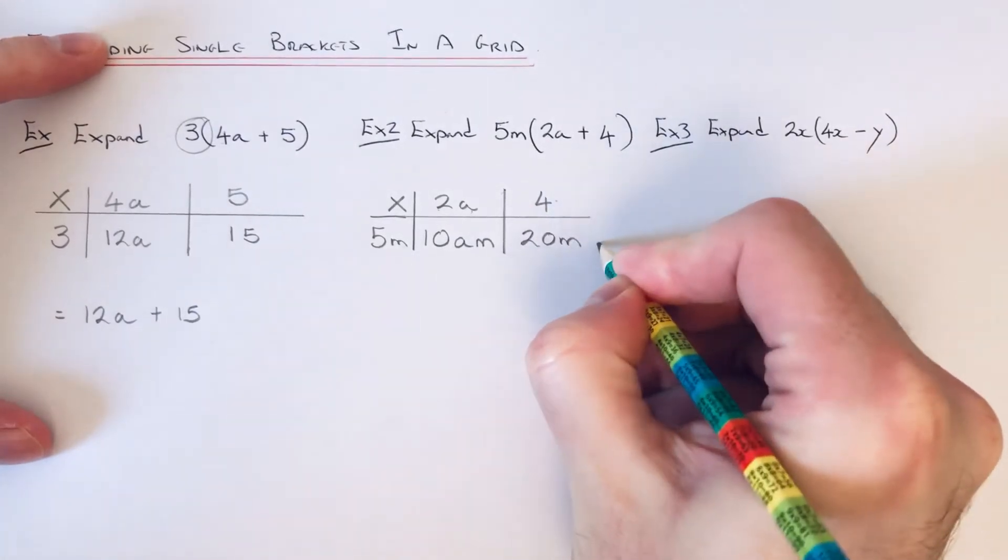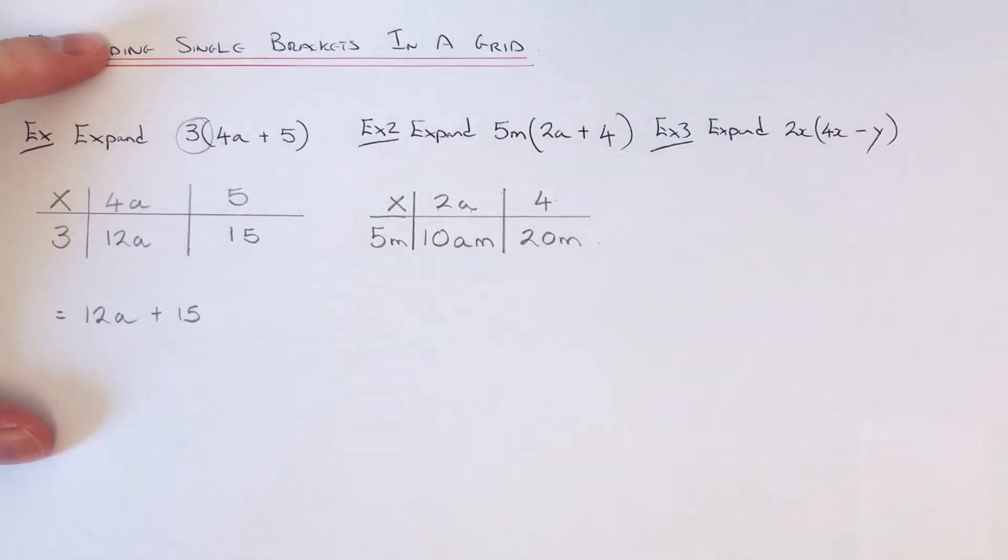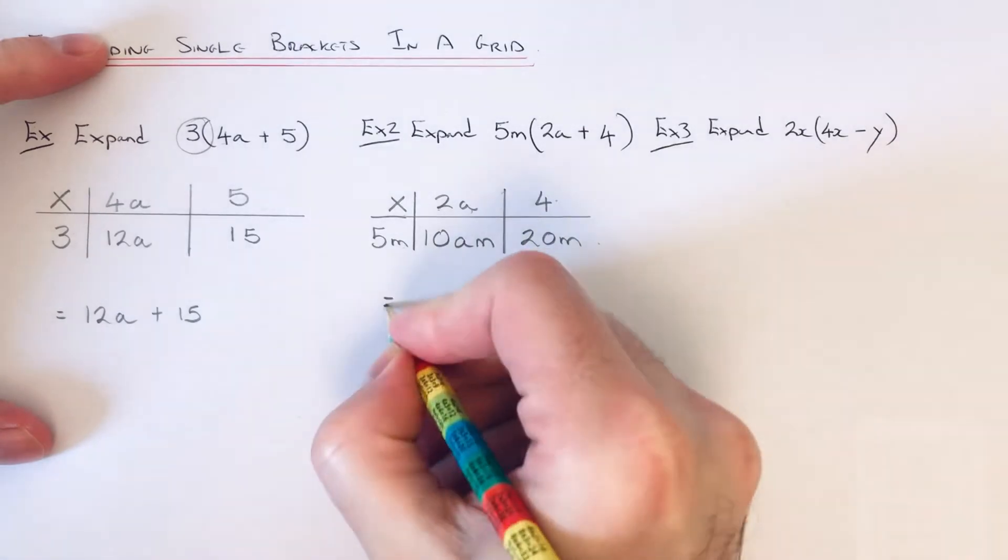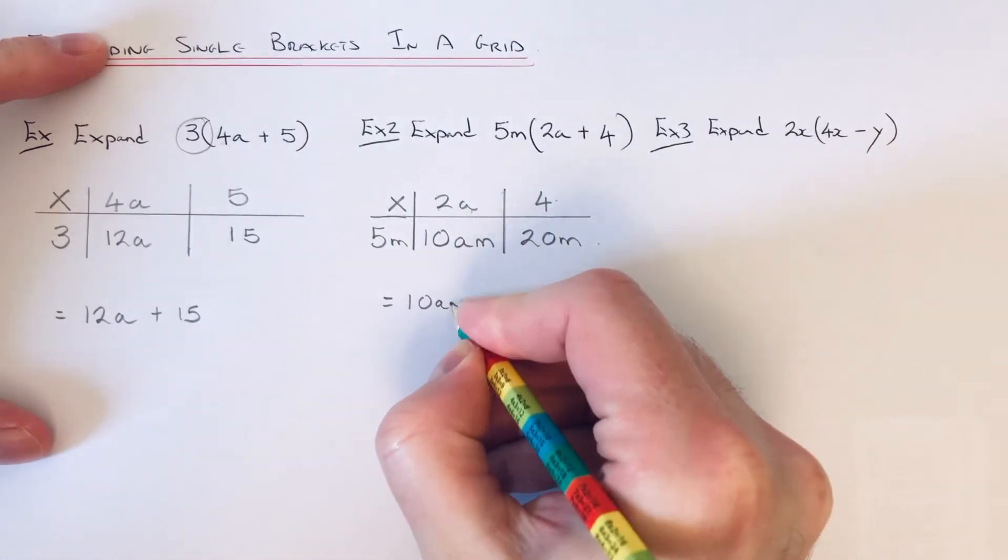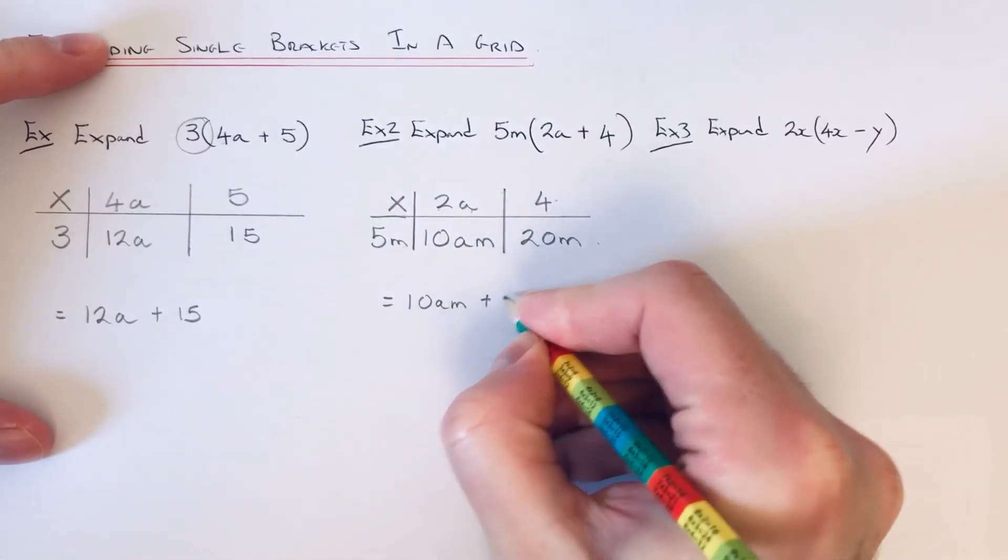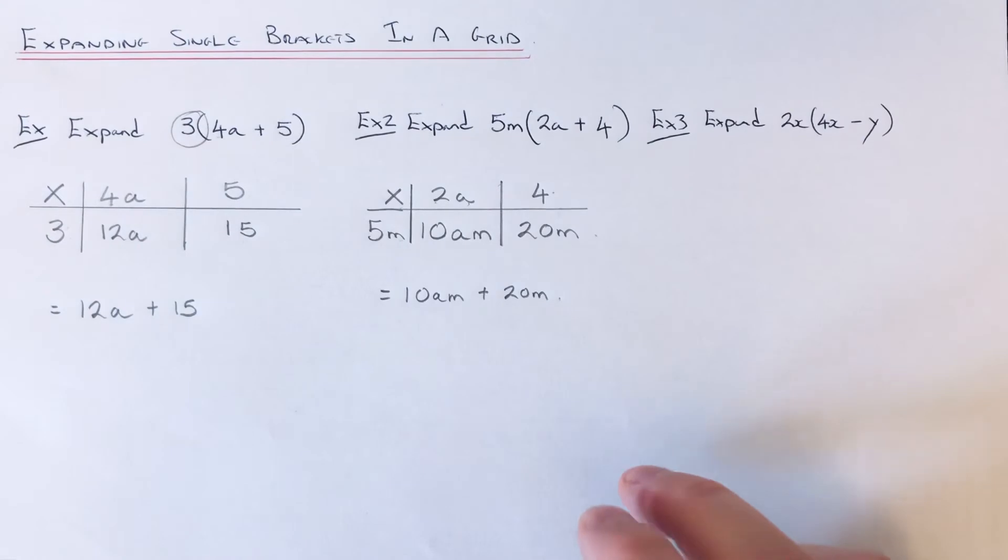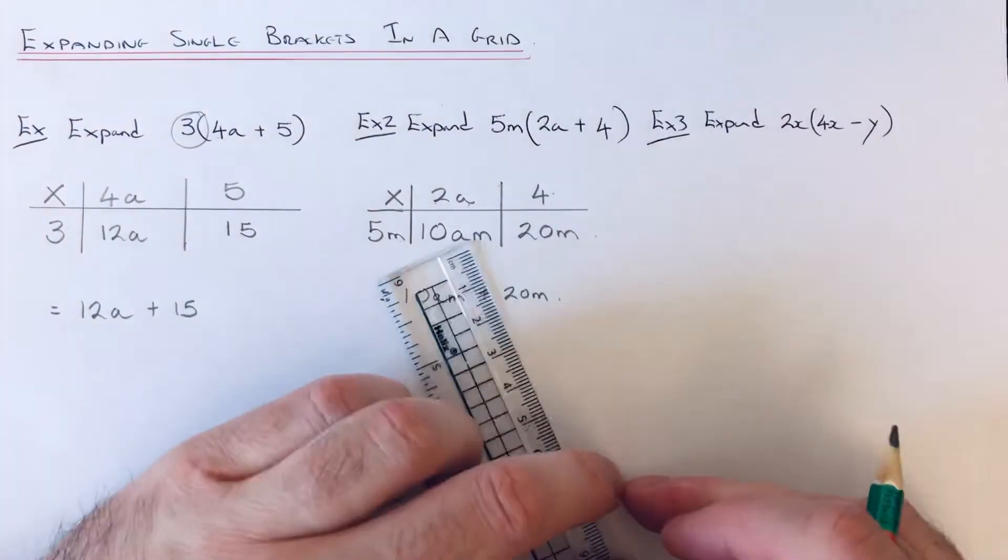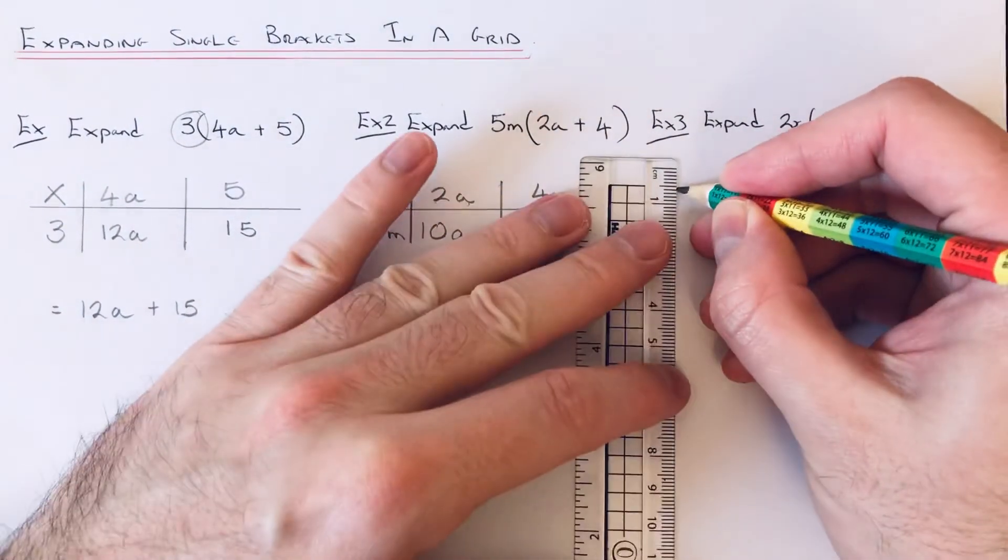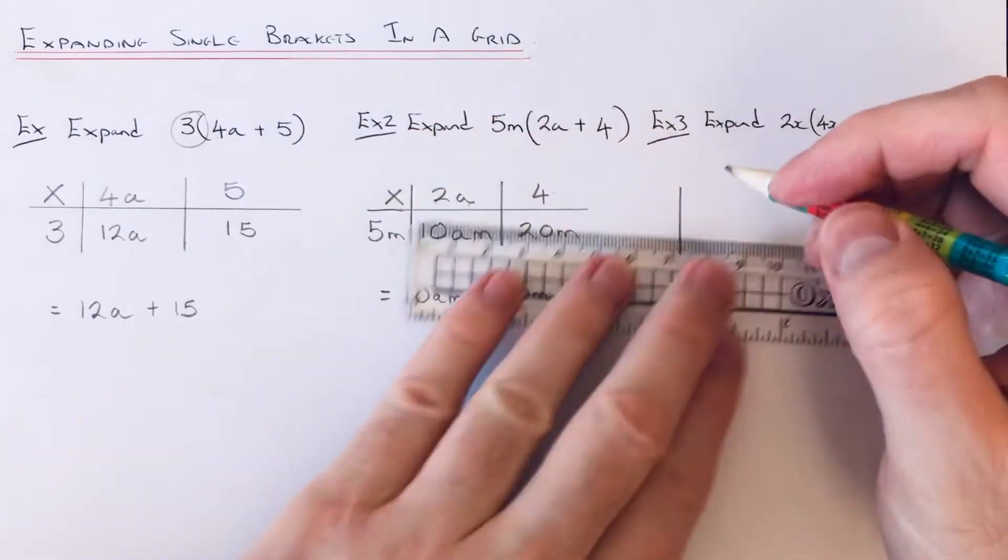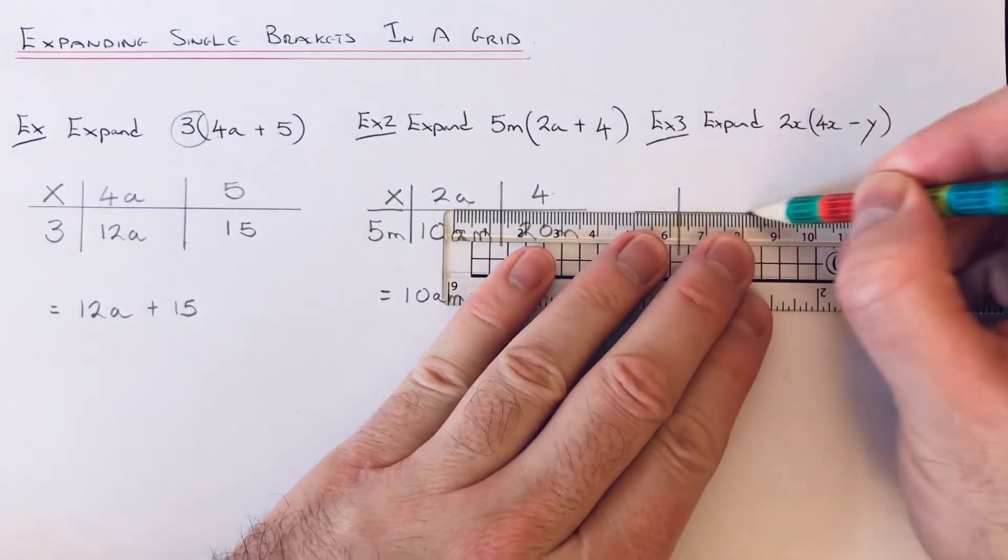Again, we've got our two terms here, so we write the final answer as 10am + 20m. Let's look at our third example, so we've got expand 2x(4x - y). Again, draw a grid similar to the first two.